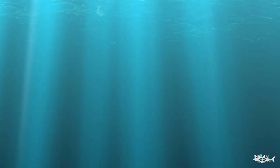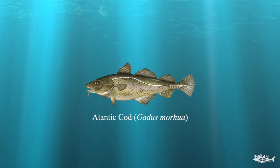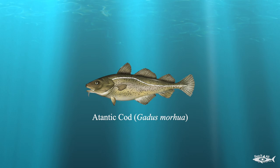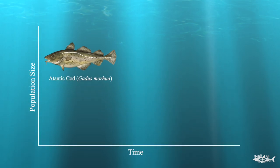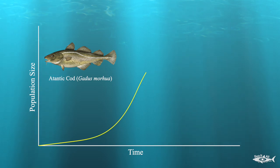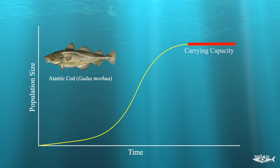Let's start by drawing some graphs. First, let's pick a fish species, like the Atlantic cod, which you likely had before if you live in New England. If we plot the abundance of a cod population over time, it's going to start low and then increase over time until it eventually reaches equilibrium.